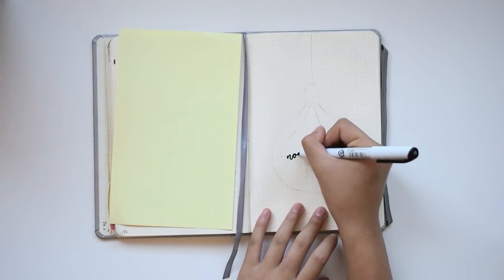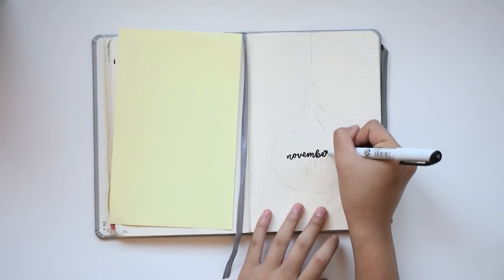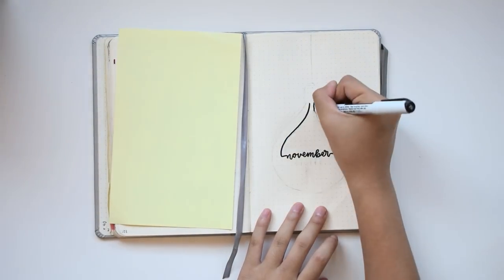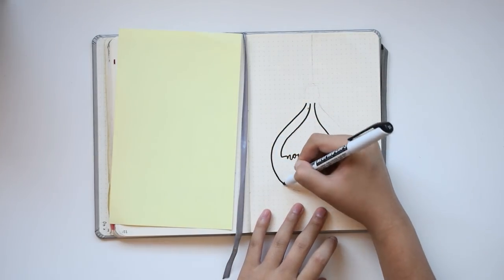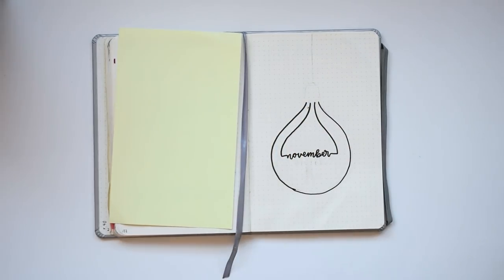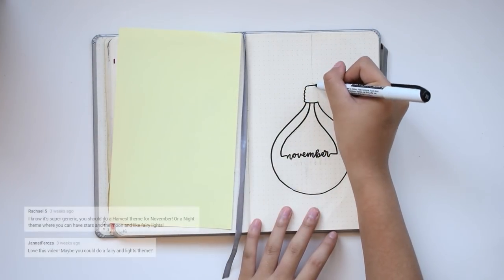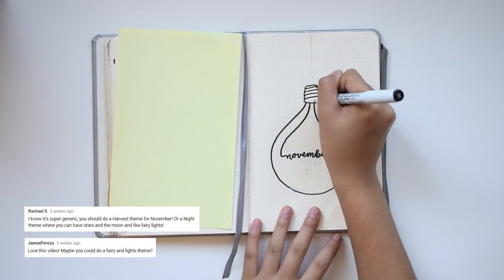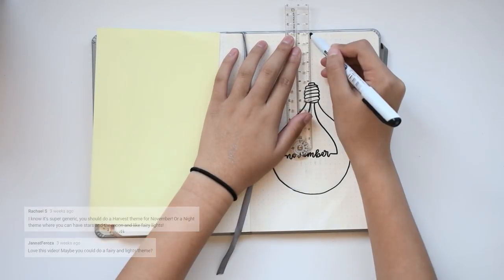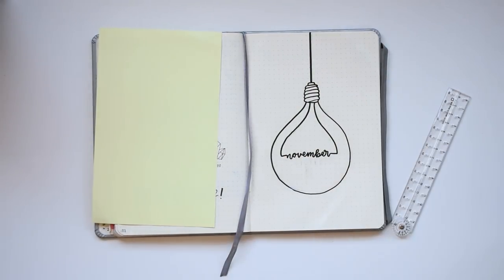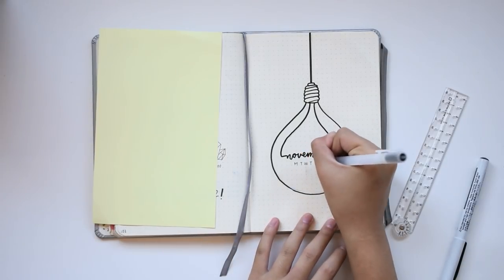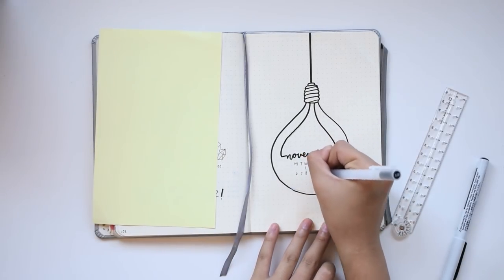Hey guys! Today I'm planning for the month of November in my bullet journal, and November's theme is light bulbs and fairy lights, just lights in general. This was suggested by a few of you in my October plan with me video, so if you have any suggestions for December's theme, please leave them in the comments.